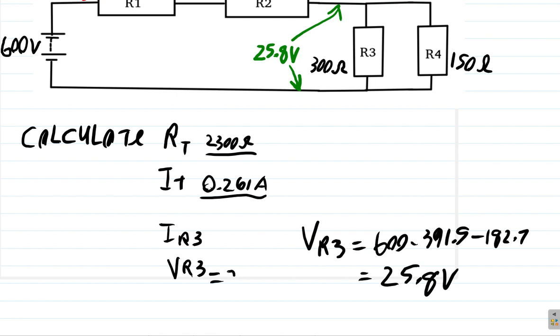No, no, no. 25.8 volts. Current is voltage over resistance. So it's the volts, 25.8 volts, over the resistance of 300 ohms. Equal.